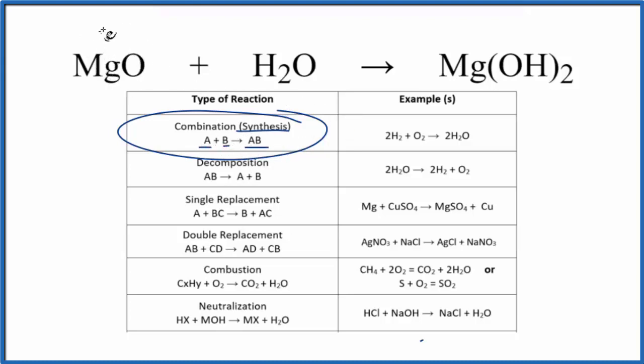You can think of this as substance A, substance B, and they join together to give us just one substance, we'll call it AB. That's the combination or synthesis reaction.